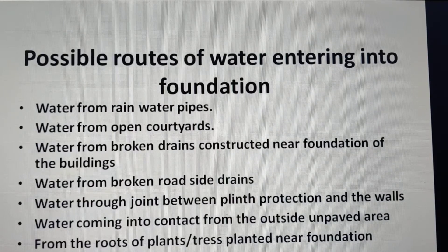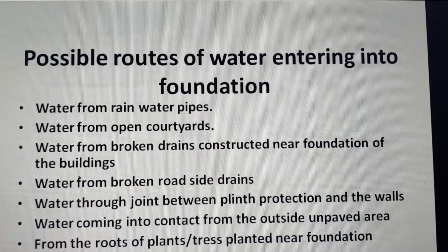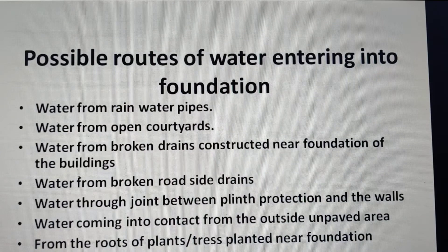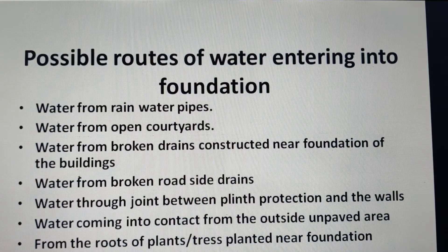Possible routes of water entering the foundation of a building include: water from drain water pipes, water from open courtyards, water from broken drains constructed near the foundation, water from broken roadside drains, water through joints between plinth protection and walls (which is very common), water coming from outside unpaved areas, from the road, or from plants and trees near the foundation.